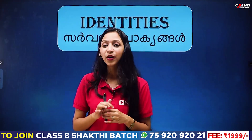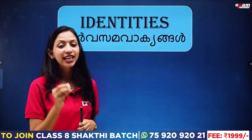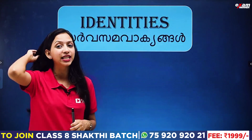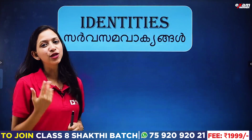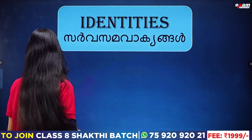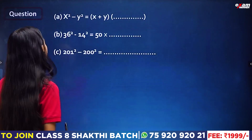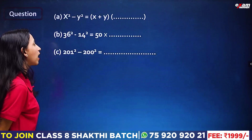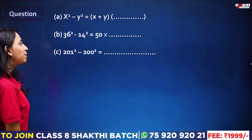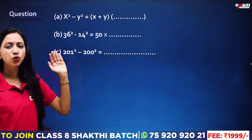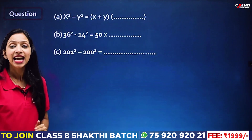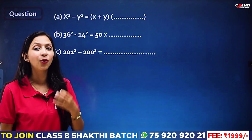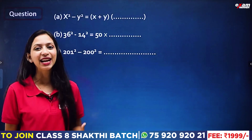Let's get started in this chapter. We have a question: x² - y² is equal to x plus y into dash. What is shown here? We have an identity here.